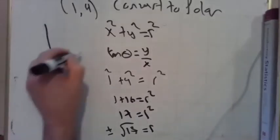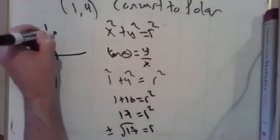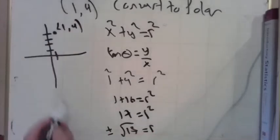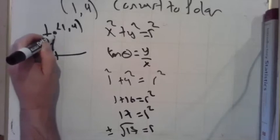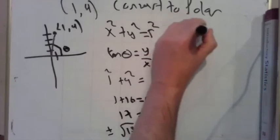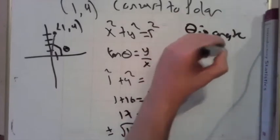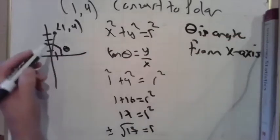So let's draw this guy out. Here's my point one, four in Cartesian. So I'm going to... I could say this angle right here, theta. Remember theta is the angle from the x-axis.